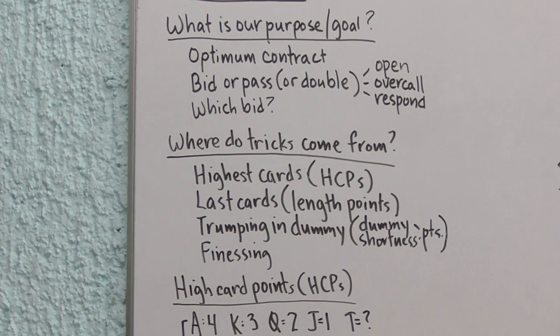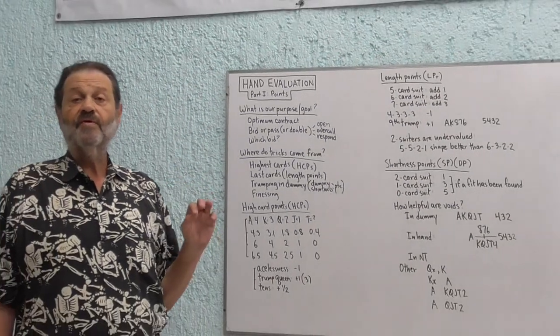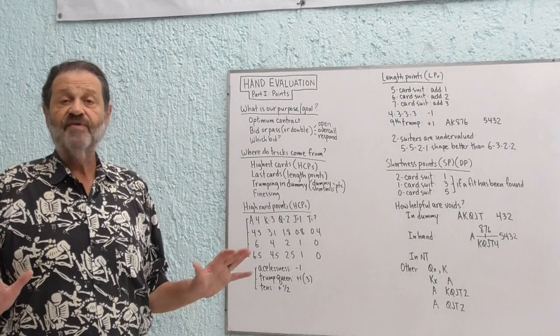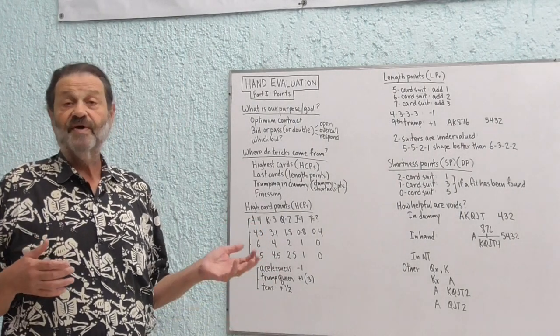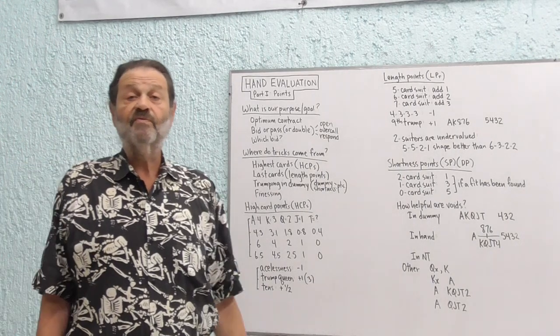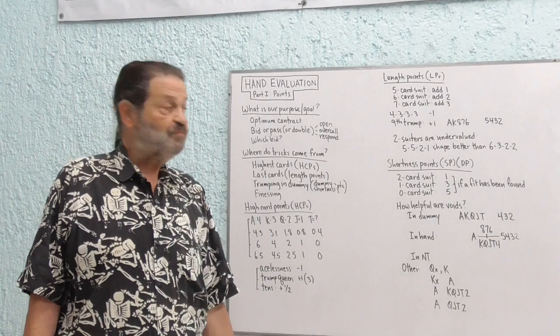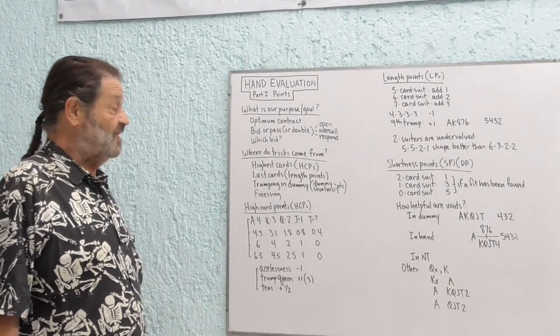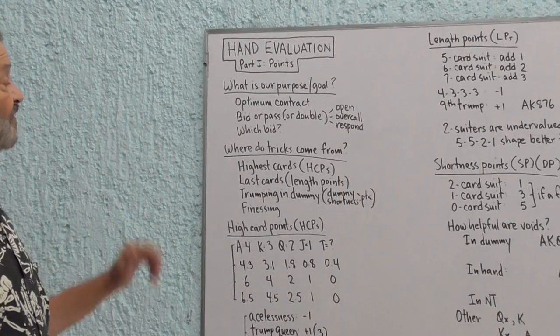When I say trumping in dummy, I want to emphasize to you that what I mean by dummy is the hand with the shorter piece of trump. So if we're in a 5-3 fit and there's a three-card trump suit in dummy, even if it's in hand, it doesn't matter. If we can trump with one of those three, we will manufacture a sixth trick, assuming we can take the other five. We'll look at an example of that in a moment. And, of course, finessing is where tricks come from, but that has nothing to do with hand evaluation.